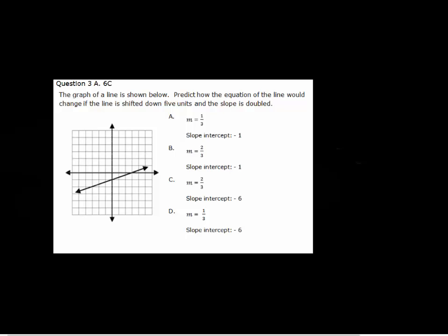For this one here, just be sure you're reading carefully. The graph of the line is shown below. Predict how the equation would be changed if the line is shifted down 5 units. So go to the y-intercept and count down 1, 2, 3, 4, 5 units. And then, it says the slope is doubled. So, determine the slope of the given line. We've gone up 1 and over 3. So that's a slope of 1 third.